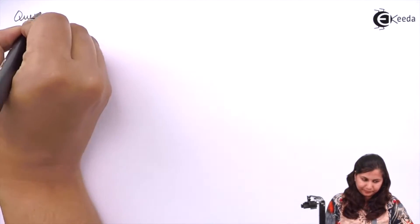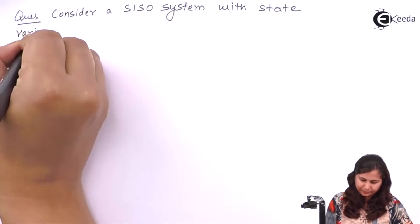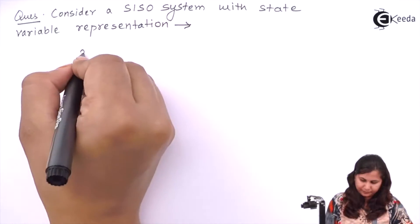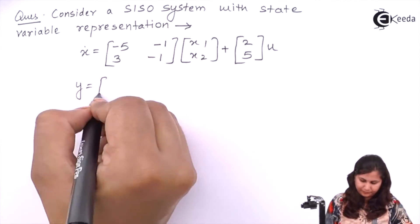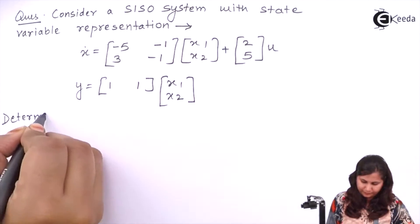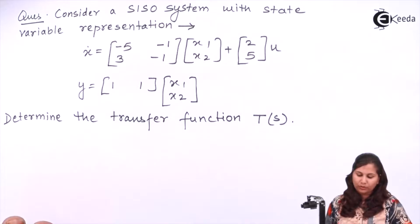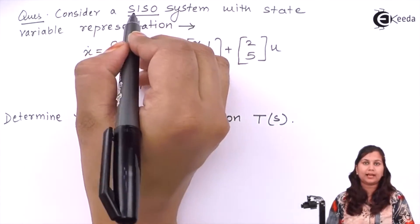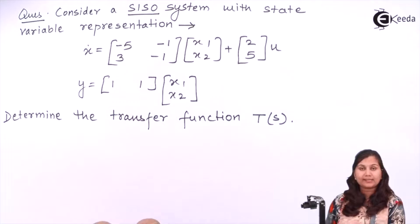Hello friends. In this video we are going to solve a problem on how to determine the transfer function of a system using the state model. So let's take a problem. Our problem is to obtain the transfer function for this SISO system, that is single input and single output system, and the state variable representation or the state model of the system is given to us. So let's try to solve this problem.